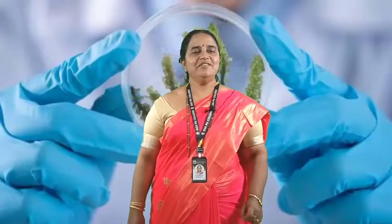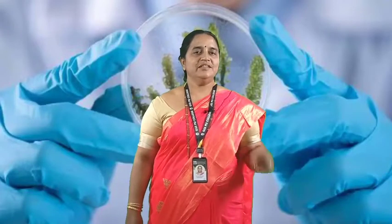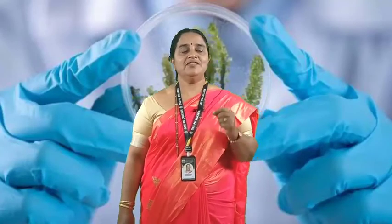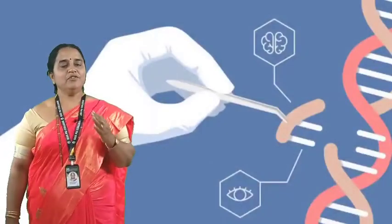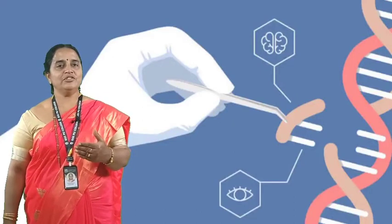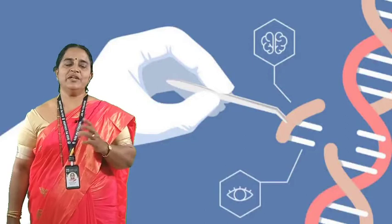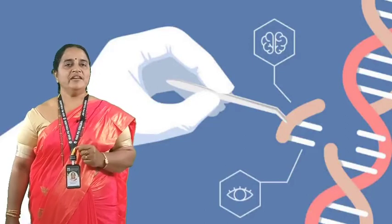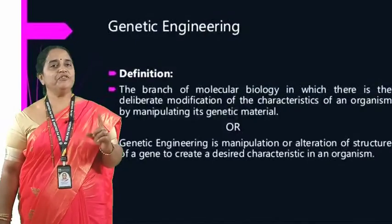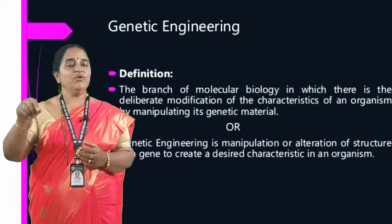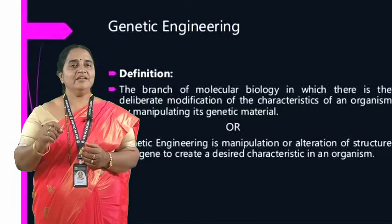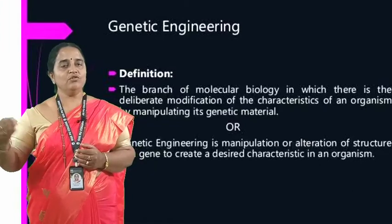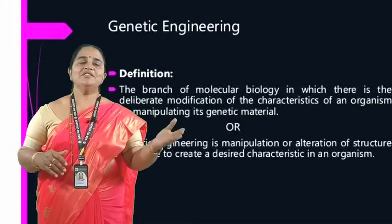Hello students. In the previous session I introduced Unit 9, that is Biotechnology Principles and Processes. Let us study one by one the main steps involved in genetic engineering, which is also known as recombinant DNA technology and gene cloning technique. Genetic engineering is defined as in vitro transfer of a gene of interest or desired gene into the host cell using a vector to obtain the clones of the desired gene or the product of the gene.